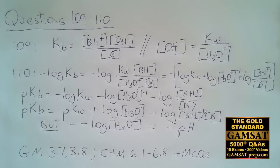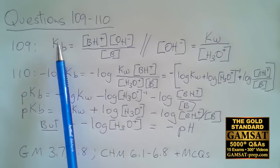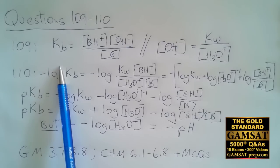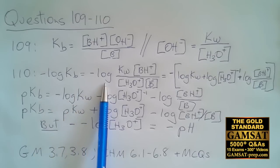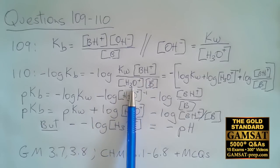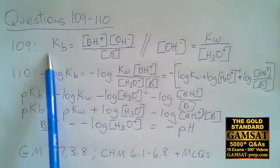Now comes the fun part — you get to use some logarithm rules. In typical ACER fashion, they let you complete a relatively simple action and then use those rules to do something more complex. Question 110 gives some equations and asks which of the following expresses pKB. We know pKA equals negative log KA, which means pKB equals negative log KB. We have KB from the previous question, so we take the negative log of both sides to get pKB.